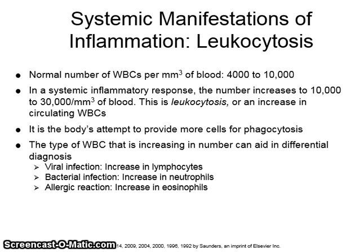Leukocytosis is an increase in the number of white blood cells circulating in the blood. The normal level is 4,000 to 10,000 per cubic millimeter. During a systemic inflammatory response, particularly a response to infection, leukocytosis occurs and the numbers increase to 10,000 to 30,000 per cubic millimeter. This increase primarily involves neutrophils. Leukocytosis is the body's attempt to provide more cells for phagocytosis.